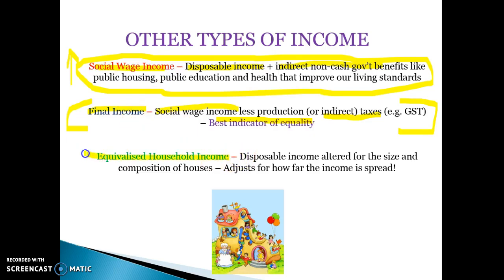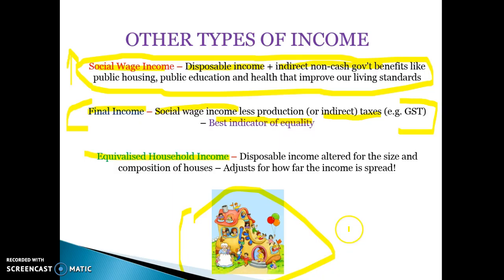Equivalised household income is disposable income adjusted for the size and composition of households. It determines purchasing power by dividing income based on the number of people in the house, although people under 18 don't get divided by exactly one — they have a smaller ratio.